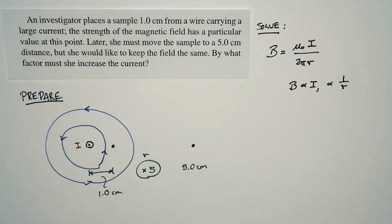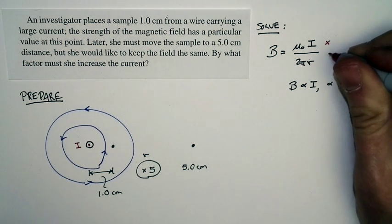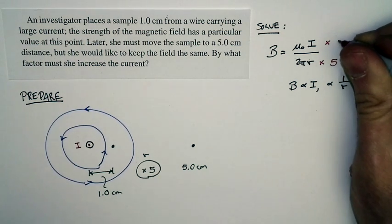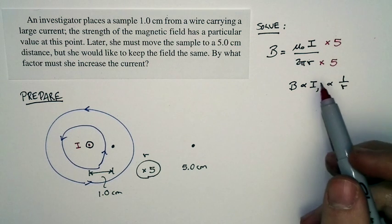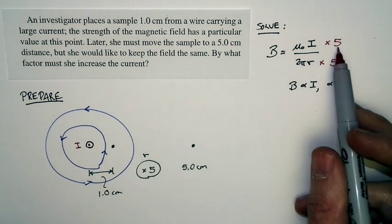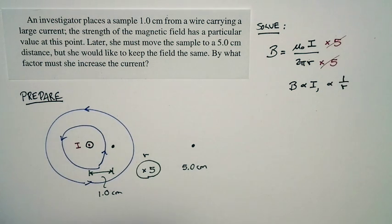So if we've increased the distance by a factor of five, we need to increase the current by a factor of five in order to keep everything in balance. Because we increased the denominator by a factor of five, we also increased the numerator by a factor of five. These factors will cancel and so everything will be back where it was.